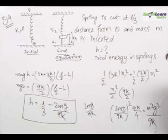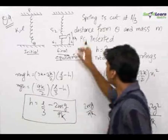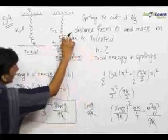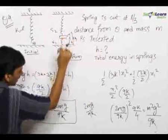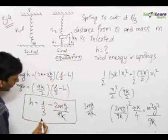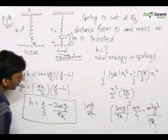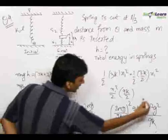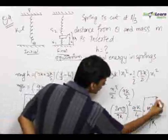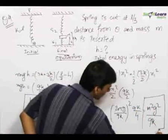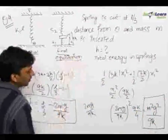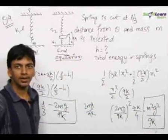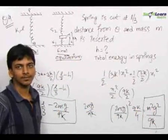The final answer for the equilibrium height from the ground is h = L/3 − 2mg/(9k), and the total energy stored in the two springs at equilibrium is m²g²/(9k).